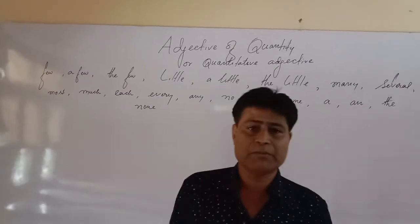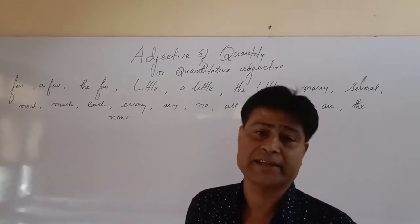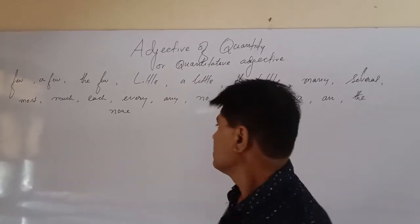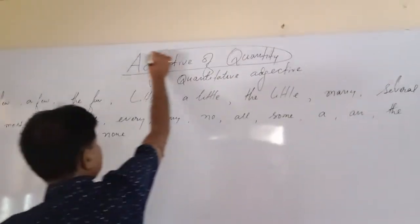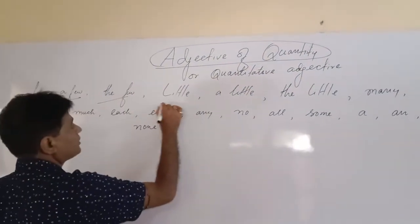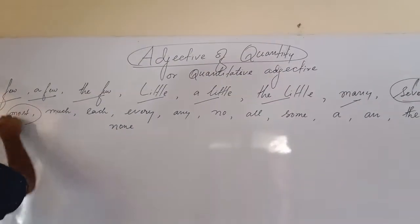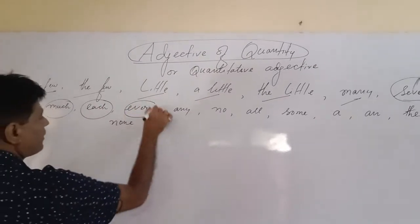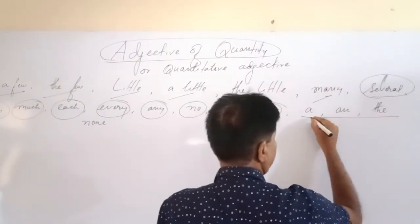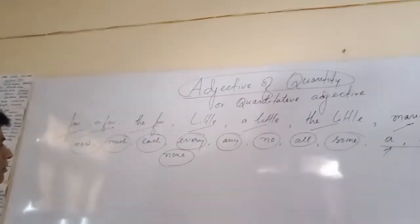Good morning friends, my name is DC Paul. Today I am going to teach you about adjectives of quantity, also called quantitative adjectives. Quantitative adjectives include: few, a few, the few, little, a little, the little, many, several, most, much, each, every, any, no, all, some, and articles 'a' and 'the'.